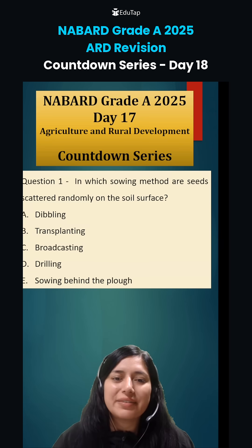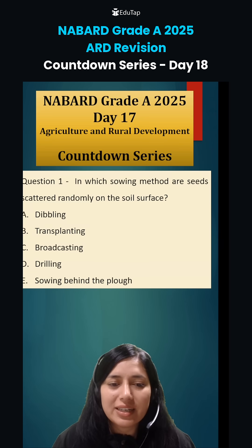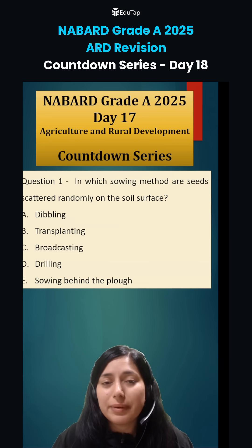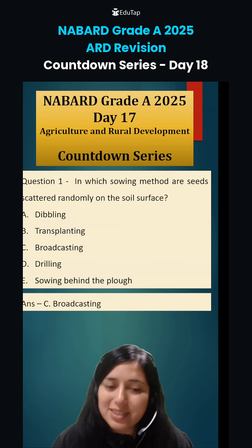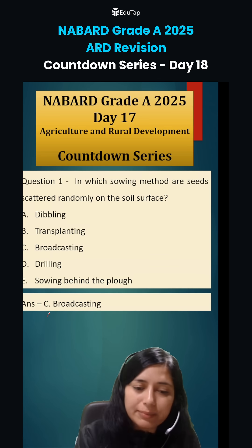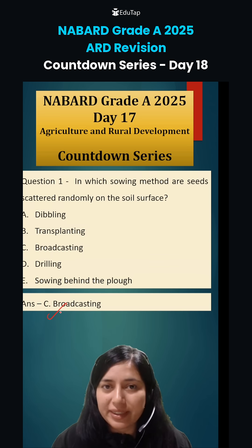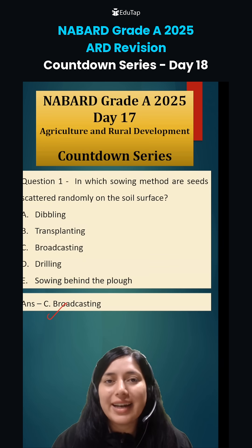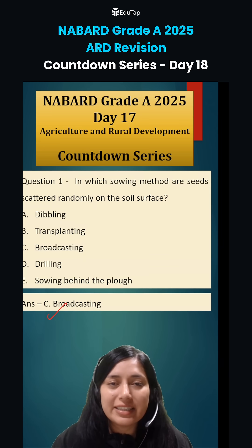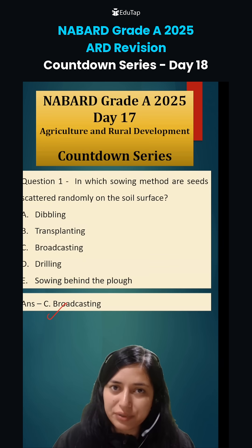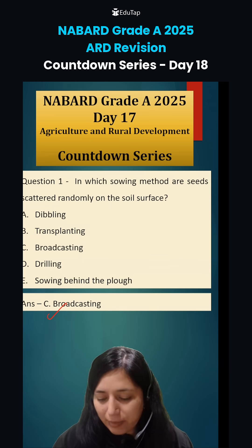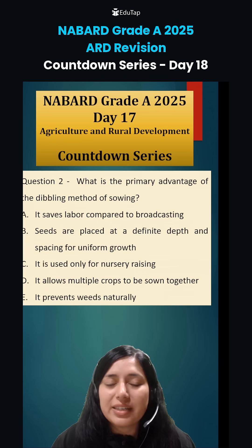The first question of day 17 was: in which sowing method are seeds scattered randomly on soil surface? Students, this particular method is broadcasting. We have different types of seed sowing methods, and in broadcasting, we just randomly scatter seeds over the soil surface. This question was also asked in your Nabar examination.